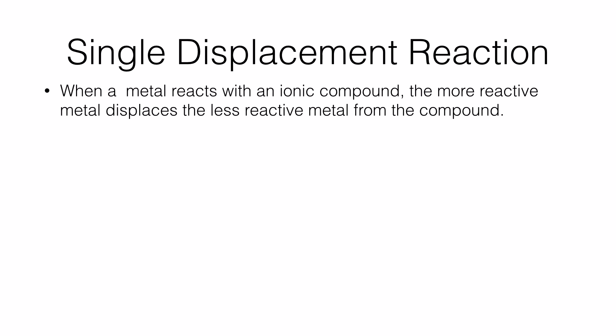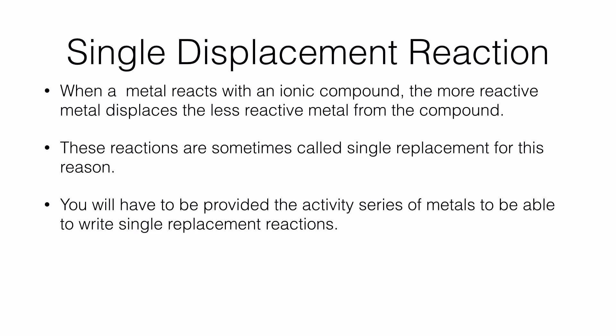The next type of reaction is called single displacement reaction, sometimes also called single replacement reaction. When a metal reacts with an ionic compound, the more reactive metal displaces the less reactive metal to form a compound. In order to predict whether a chemical reaction will take place in a single displacement reaction, you should be provided with a list of metals arranged in increasing or decreasing order of their reactivity — this is called the activity series. At a grade 10 level, if you have the activity series, you can predict single displacement reactions, or if you know the standard reduction potentials, because the more reactive metal will have a lower standard reduction potential value.